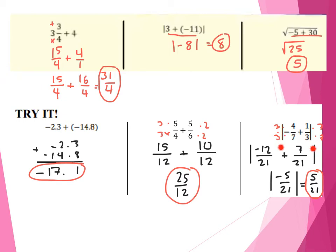The last one — I have the absolute value of negative 4 sevenths plus 1 and 1 third. Again, I'm inside the absolute value, adding two rational numbers together, so I have to get a common denominator. I multiplied 7 and 3 to get 21 as an easy common denominator. So 7 times 3 gives me 21, and I take 4 times 3 to give me negative 12. Notice how this was negative and I applied the negative to the numerator. Then 3 times 7 gives me 21, so I take 1 times 7 to give me 7. Taking negative 12 plus 7, keeping the denominator as 21, I get negative 5. Don't forget about the absolute value bars — negative 5 over 21 turns into 5 over 21, because it's 5 over 21 units away from 0.